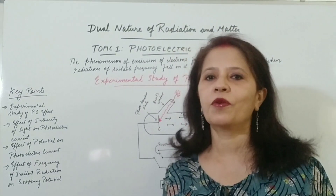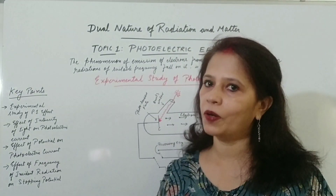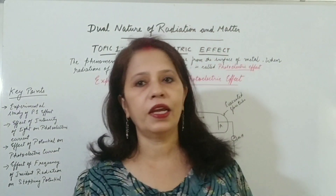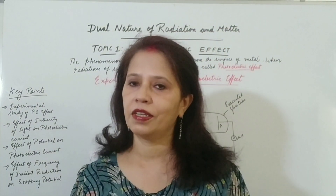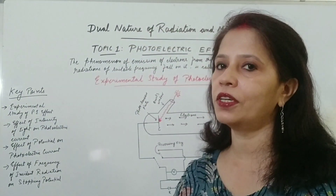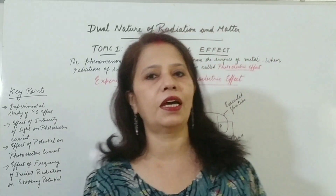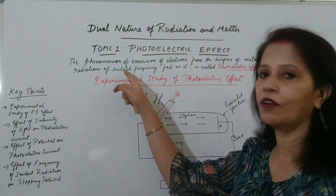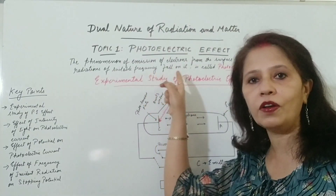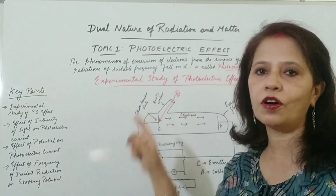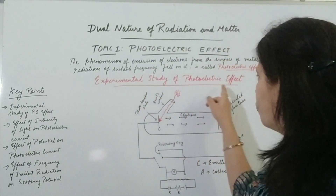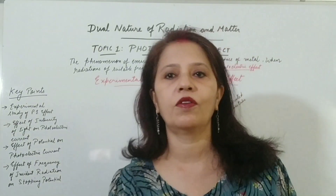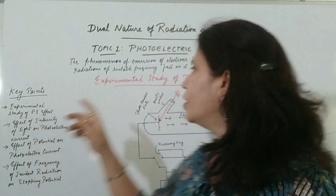Hello viewers, today we are going to study about the dual nature of radiation and matter. The phenomena of emission of electrons from the metallic surface when radiations of suitable frequency fall on it is called the photoelectric effect. The electrons which are emitted are called photoelectrons.